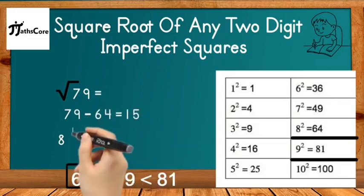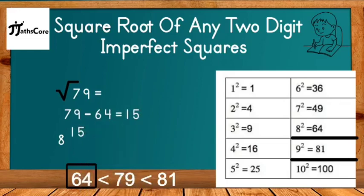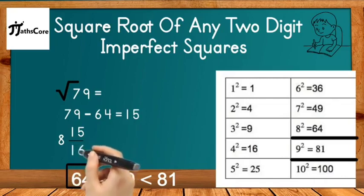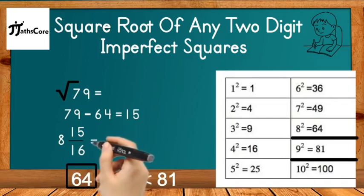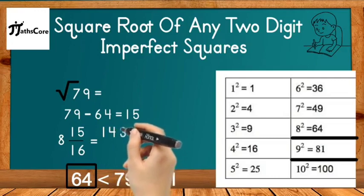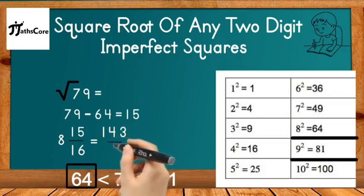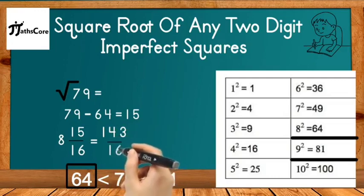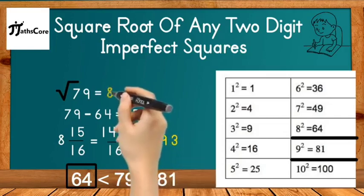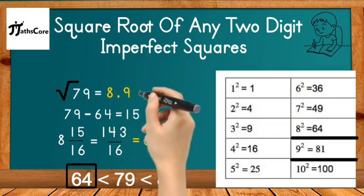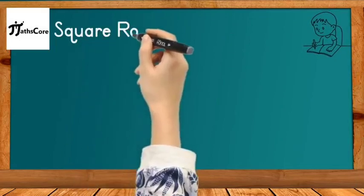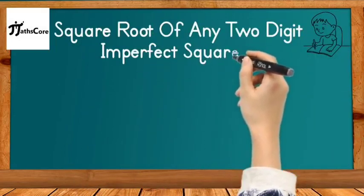Subtract 64 from 79: 79 − 64 = 15. Write down 15 and divide it by double of 8, which is 16, making a mixed fraction: 8 and 15/16. Simplify: 16 × 8 = 128, and 128 + 15 = 143. So 143 ÷ 16 = 8.93. The square root of 79 is 8.93.